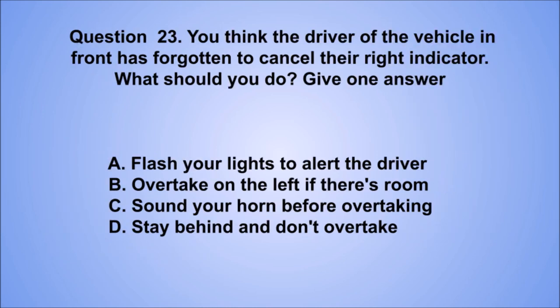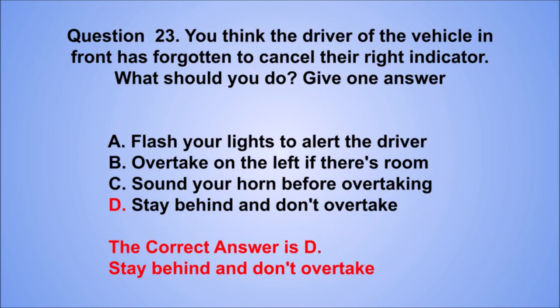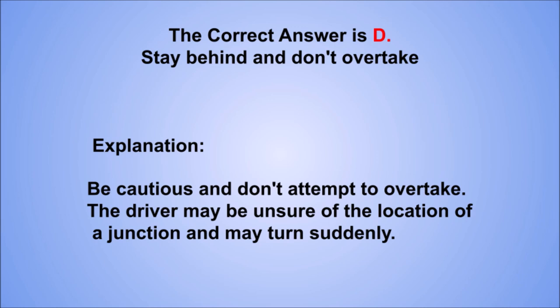Question 23. You think the driver of the vehicle in front has forgotten to cancel their right indicator. What should you do? Give one answer. A. Flash your lights to alert the driver. B. Overtake on the left if there's room. C. Sound your horn before overtaking. D. Stay behind and don't overtake. The correct answer is D, stay behind and don't overtake. Be cautious and don't attempt to overtake. The driver may be unsure of the location of a junction and may turn suddenly.